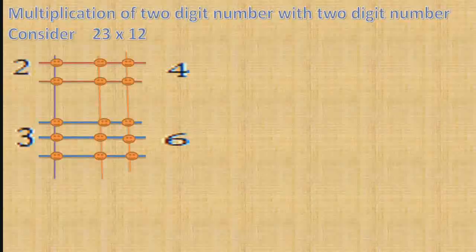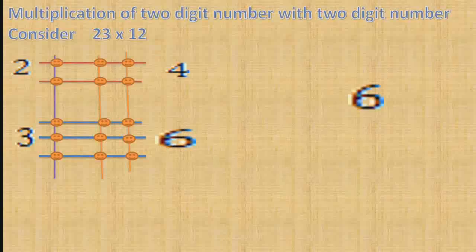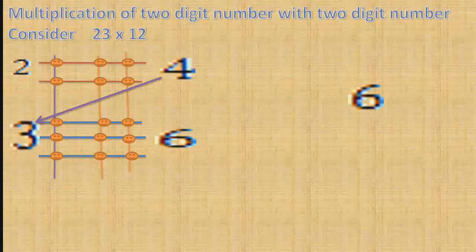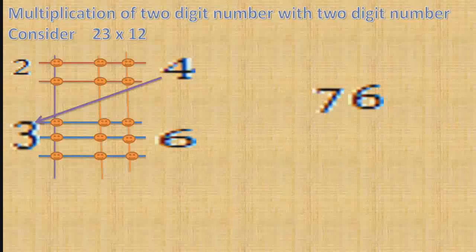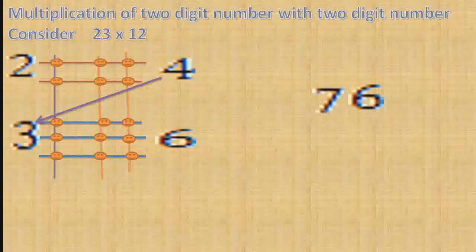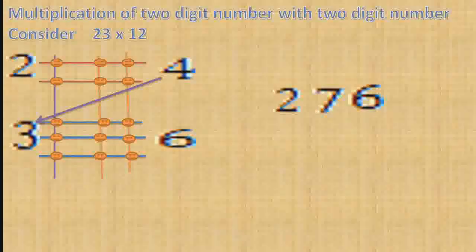The last region gives 2, write 2. Now, starting from the right bottom corner, see the number 6 and write it in the answer. Then add the numbers 4 and 3, that is 7, write it in the answer before 6. And the number 2, write before 7. Thus, the multiplication of 23 and 12 is 276.